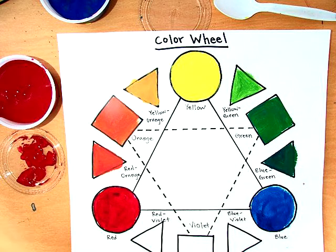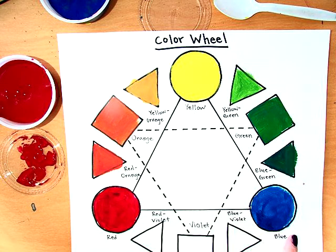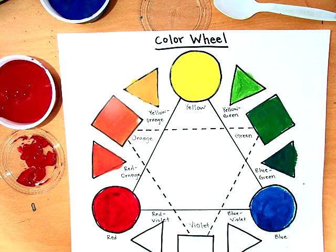Welcome back students, we are going to be finishing up our color wheel today. We are going to be mixing our paint colors. Remember, I'm going to give you the primary colors - your yellow, your red, and your blue paint - and you have to make the secondary and the tertiary colors. So I'm going to show you today how I would like you to do this so that we don't waste very much paint and so that there's less cleanup at the end.